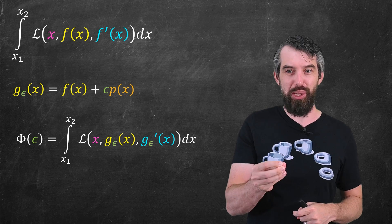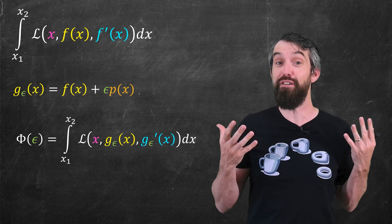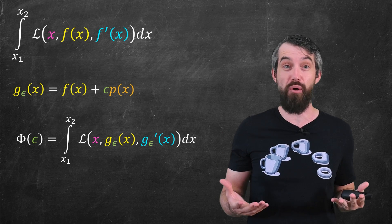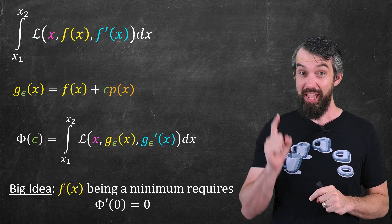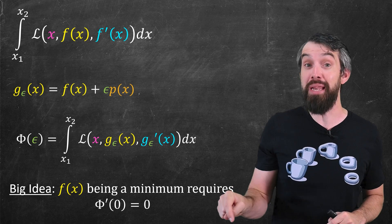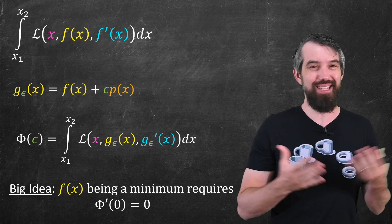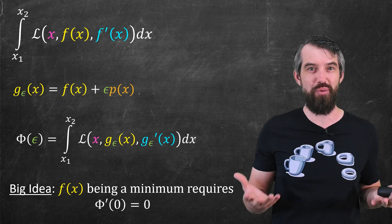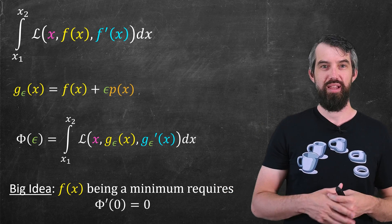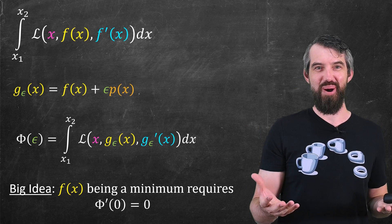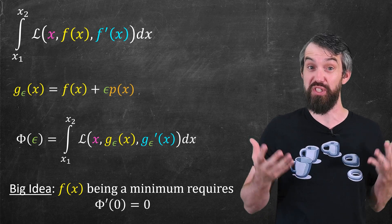So now here's the big idea. If f(x) is a minimum, then it must be the case that this function has the normal old minimization properties of first year calculus, its derivative is just zero. If ever this derivative was not zero, then I would be able to change my value of ε and get something that was smaller.